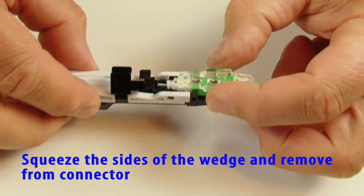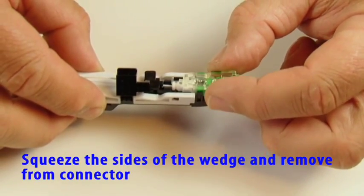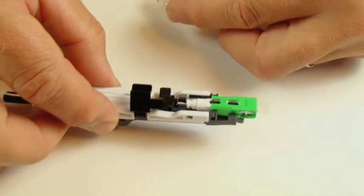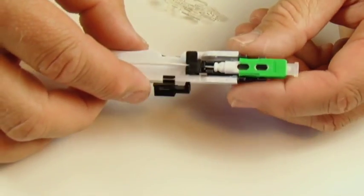Squeeze the sides of the clear plastic wedge and remove from connector. This action releases the internal clamp causing a tight grip on the inserted fiber.